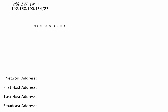In this last octet, we are going to have three bits of network, and that would leave us five bits of host, because we have a full eight bits in this octet. We've counted out 24 bits of network, meaning we have three bits left. So three bits are network and five bits are host, equaling eight bits.